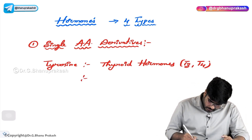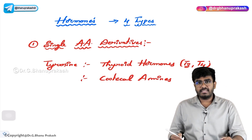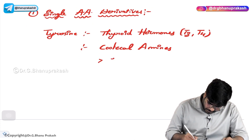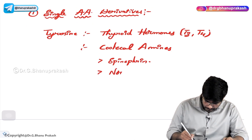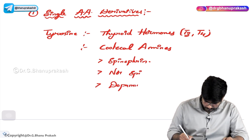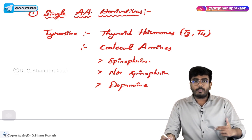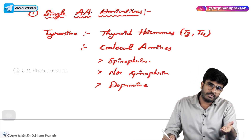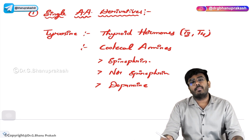In the same way, catecholamines — hormones with the catechol ring — are also single amino acid derivatives. The catecholamines include epinephrine or adrenaline, norepinephrine, and dopamine. These catecholamines are also examples of single amino acid derived hormones. So if someone asks you which amino acid dopamine is derived from, the answer is tyrosine — it is a tyrosine amino acid derivative.